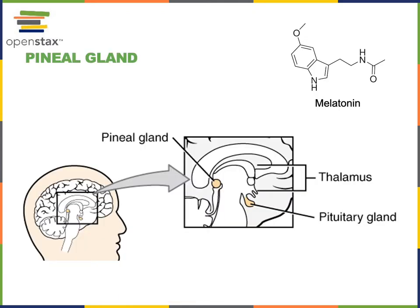The pineal gland is located in the brain in a region known as the diencephalon. A region of the diencephalon known as the epithalamus is the posterior portion, just posterior to the thalamus, and this is where the pineal gland is located.